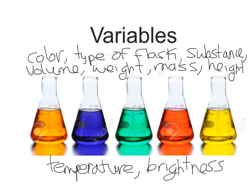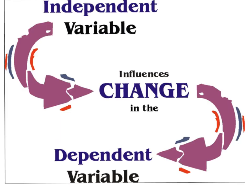So here's the relationship between independent and dependent variables. The reason you're doing your experiment is because you suspect — you've hypothesized — that this independent variable is going to influence a change in your dependent variable. For example, I like to use this one: if I have a whole bunch of shirts that are all the same except that they're different colors.